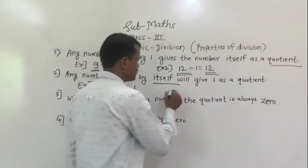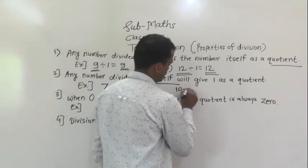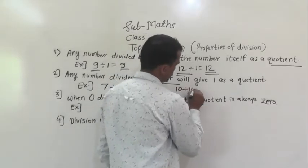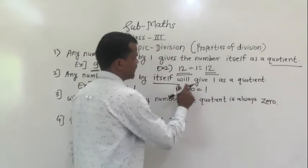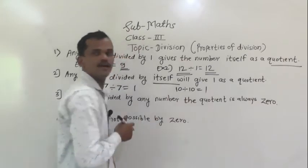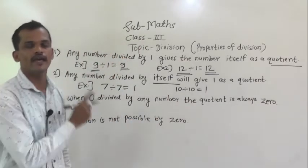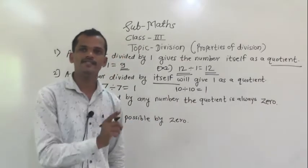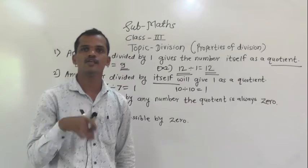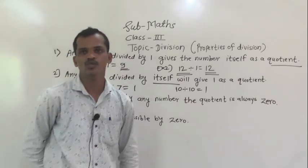Take another example: 10 divided by 10 is equal to 1, because 10 ones are 10. Here 1 comes as the quotient. So, any number divided by itself gives 1 as the quotient.